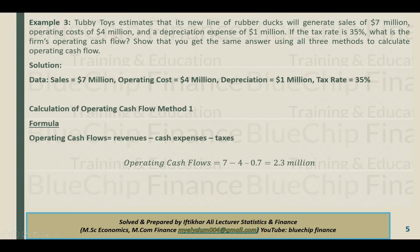Example number 3: Tobias estimates that its new line of rubber ducks will generate sales of 7 million, operating costs of 4 million, and a depreciation expense of 1 million. If the tax rate is 35%, what is the firm's operating cash flow? Show that you get the same answer using all three methods. I will use the second method first.